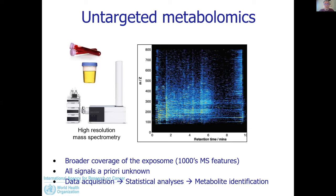Now I'll switch to untargeted metabolomics. We have been very active at IARC developing untargeted metabolomic applications in cohort studies, in particular in EPIC. You see a typical chromatogram here — it's not 100 or 200 metabolites that are measured, but several thousands in a single run. A major difference is that all the signals detected are apparently unknown. When we run this metabolic analysis, we first acquire the data, then analyze it to find signals associated with a particular outcome or intermediate endpoint, and finally identify metabolites based on different spectral characteristics.